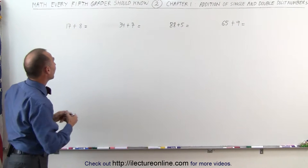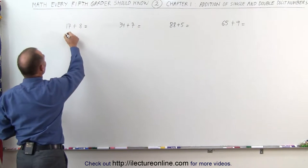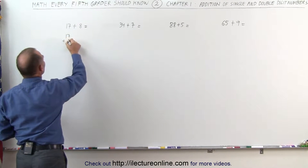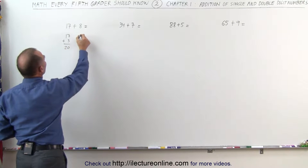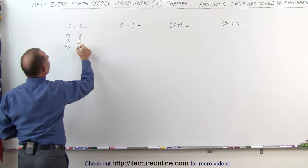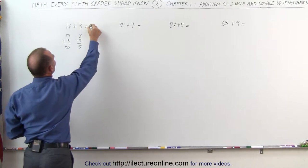20 plus 5 gives us 25. So the methodology is this: 17 plus 3 gives us 20, 8 minus 3 gives us 5, and 20 plus 5 gives us 25.